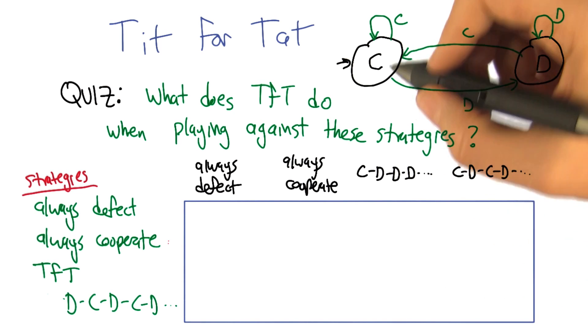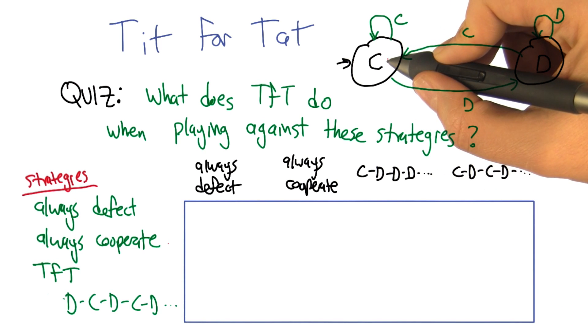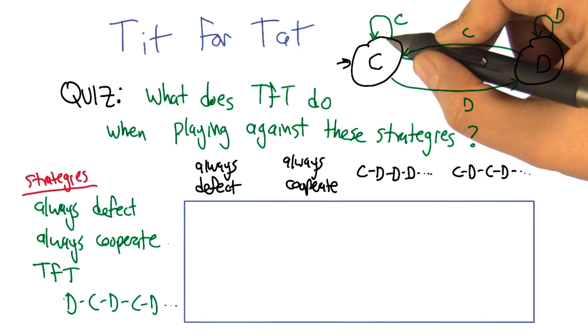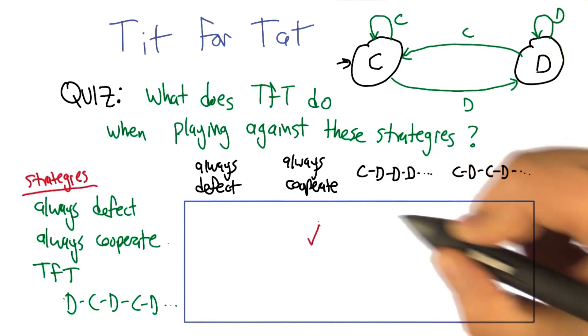Well, let's see. I start out cooperating, and since the other person is cooperating, I will continue to cooperate because that's what they did the last time. So I will always cooperate. That's right. Good.